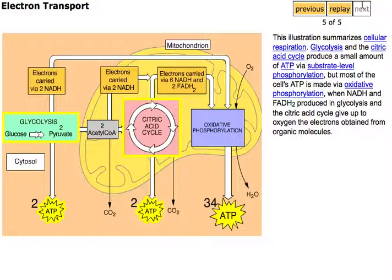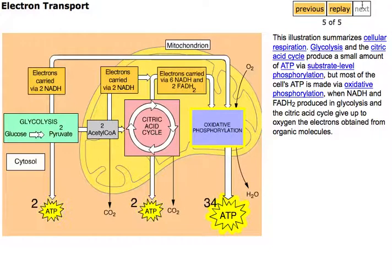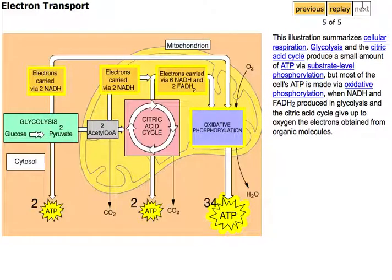But most of the cell's ATP is made via oxidative phosphorylation, when NADH and FADH2 produced in glycolysis and the citric acid cycle give up to oxygen the electrons obtained from organic molecules.